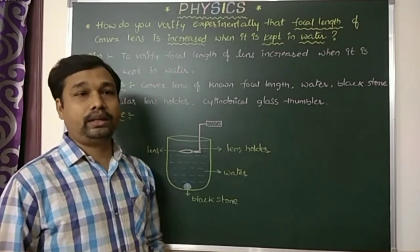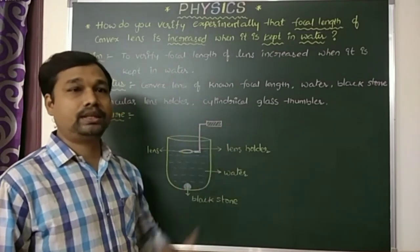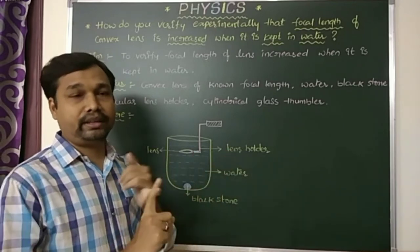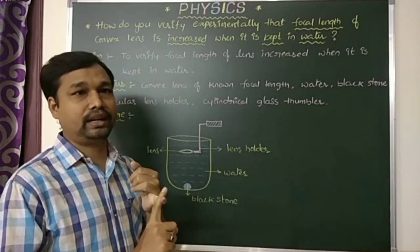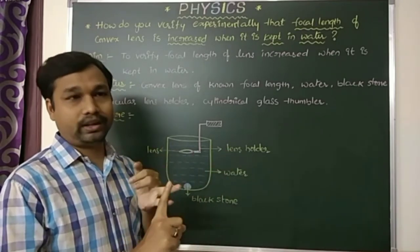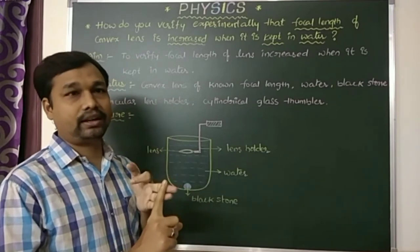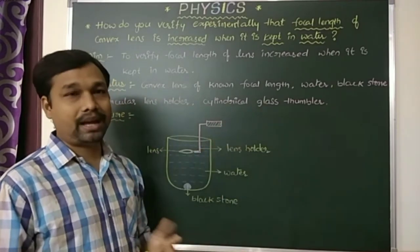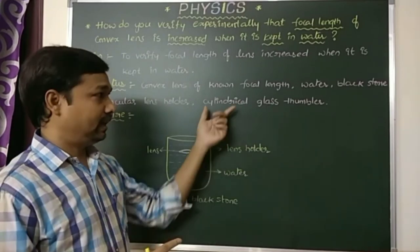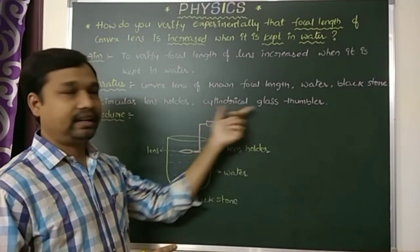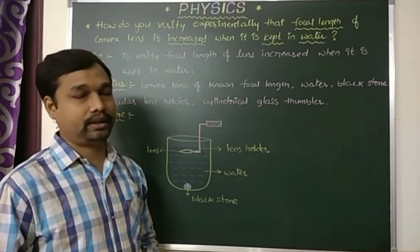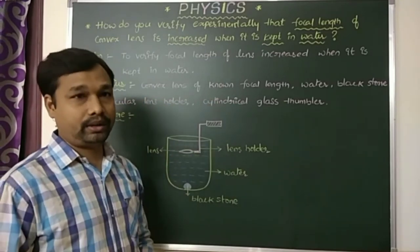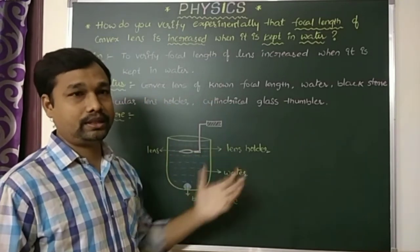What apparatus is required to do this experiment? Mainly required: a convex lens of known focal length, water, a circular lens holder, a black stone, and a cylindrical glass tumbler. These are the apparatus required to do this experiment.